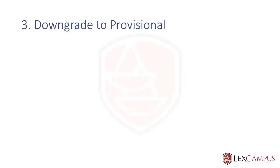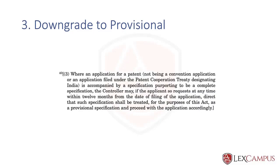The third thing to remember regarding provisional and complete specifications is that you can downgrade an application to a provisional. When we say downgrade, it is understood that the earlier filed application is a complete — but the law does not say it is a complete. It uses the word 'purported,' meaning it may be a complete or can be assumed to be a complete. This provision is not available for convention applications or PCT applications.